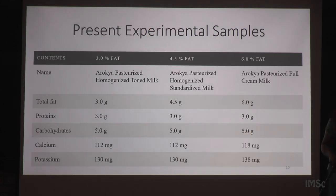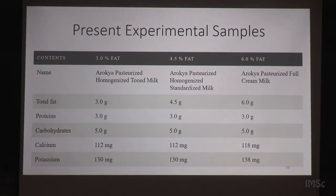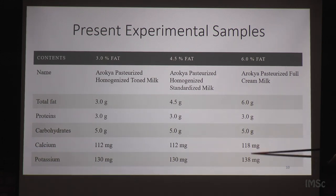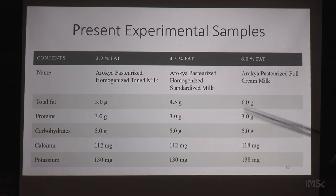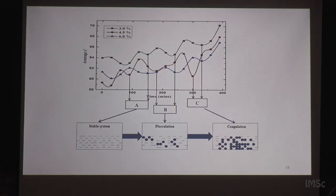In the present studies, what we did was take three commercial samples where most parameters were the same except for total fat content: 3%, 4.5%, and 6% — essentially full fat, low fat, and an intermediate variety. The only difference we saw was that the ionic content — calcium and potassium — was much higher in the 6% sample, while the proteins and carbohydrates remained the same across the three concentrations.